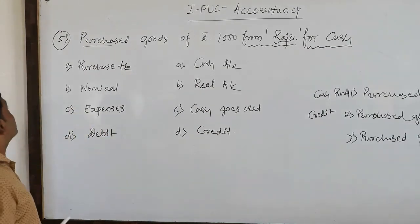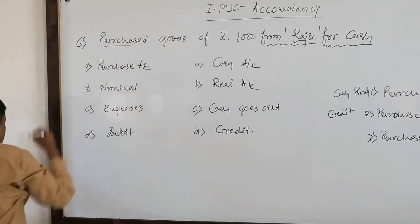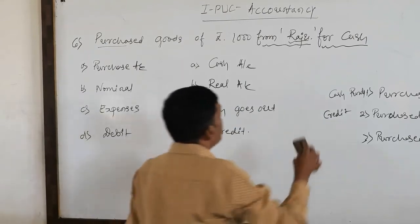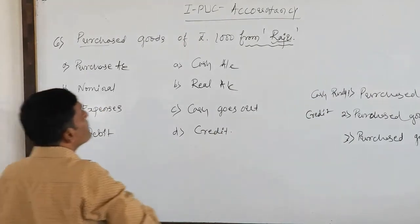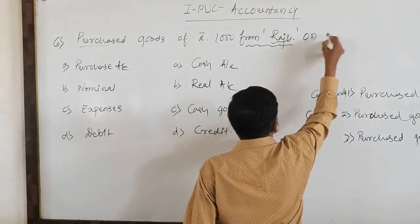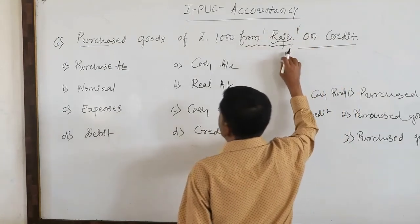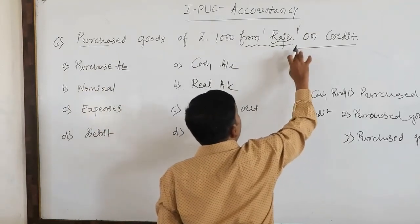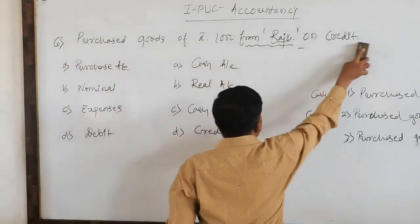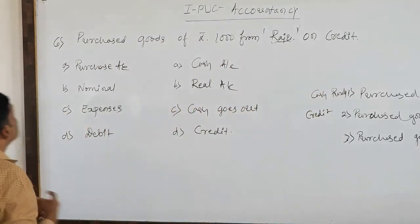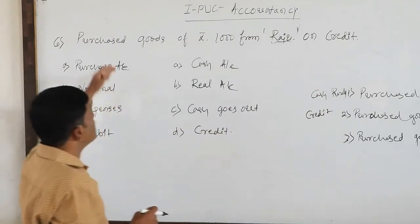Now the sixth example: purchased goods of rupees 1,000 from Raju on credit. The examiner has specifically provided 'on credit' at the end of the rough book entry, which confirms it is a credit purchase.